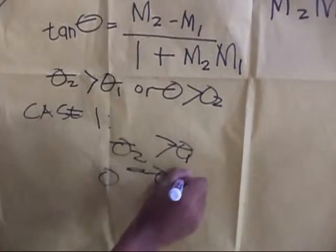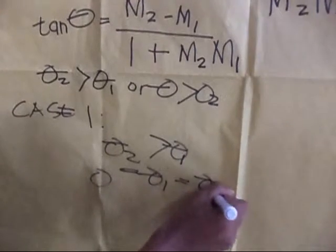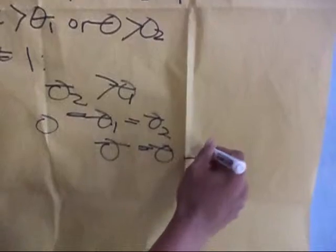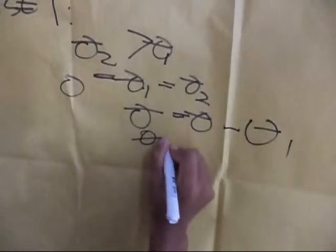Theta plus theta 1 equals theta 2. Then transpose theta 1 so it becomes minus. So the final result is theta equals theta 2 minus theta 1.